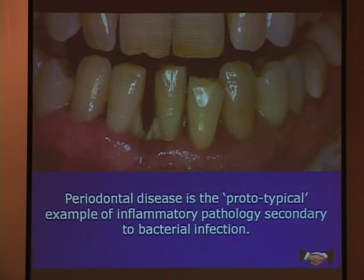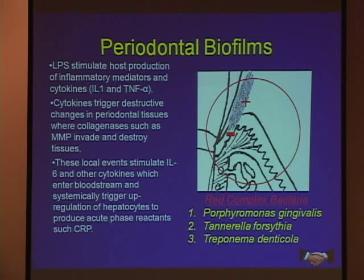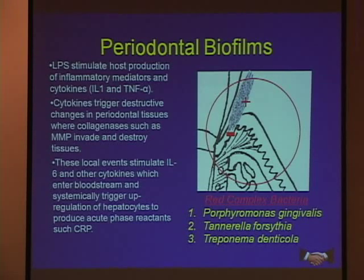In dentistry, periodontal disease is the prototypical example of inflammatory pathology secondary to bacterial infection — a textbook example of this entire process. Attention lately has shifted from the bacteria themselves to the biofilms they organize and colonize. The deeper into the biofilm you get, the more protected the bacteria are. They organize through quorum sensing — communicating and voting as a mass, behaving like a separate entity, protecting themselves from outside attempts to destroy them. This is what makes periodontics particularly tricky and important to understand.